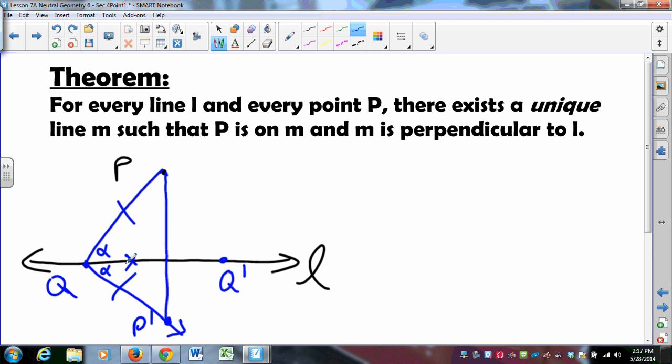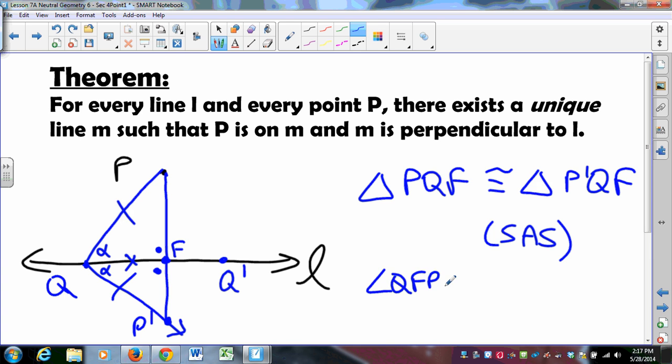This side is congruent to itself. We're going to call this point F because that has meaning. F is the foot of the perpendicular. And so now what? Triangle PQF is congruent to triangle P prime QF. That's my argument. Triangle PQF is congruent to triangle P prime QF by side angle side. And once I have that, I have that this angle is congruent to this angle. So I have two angles that are congruent and form a linear pair. Guess what kind of angles they are? They are right angles. So angle QFP and angle QFP prime are right angles. I have perpendicular lines. Yay!